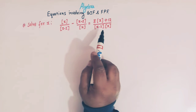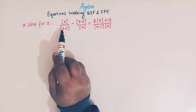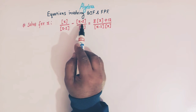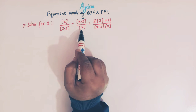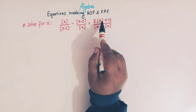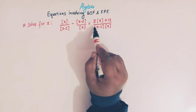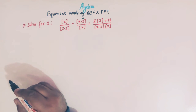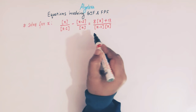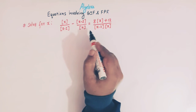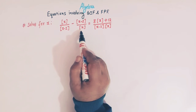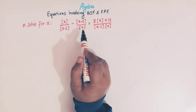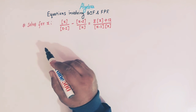So let us start. The equation is: greatest integer of x divided by greatest integer of (x minus 2), minus greatest integer of (x minus 2) divided by greatest integer of x, is equal to 8 times greatest integer of x plus 12, divided by greatest integer of (x minus 2) times greatest integer of x. Obviously, values of x that make the denominator zero are not allowed.